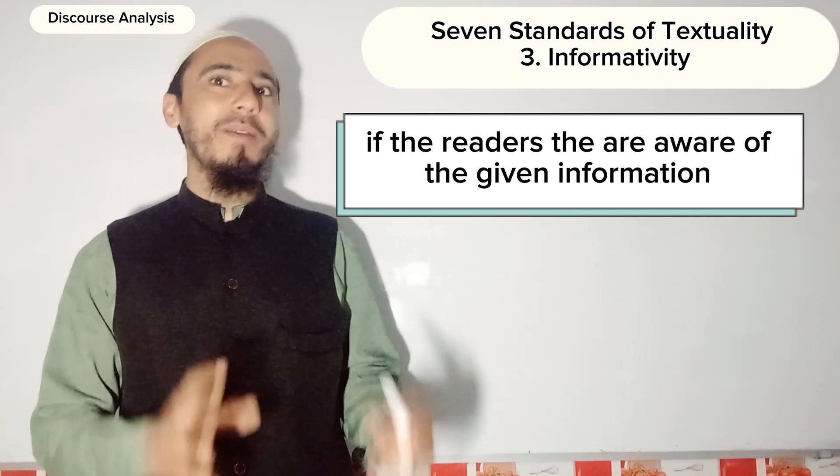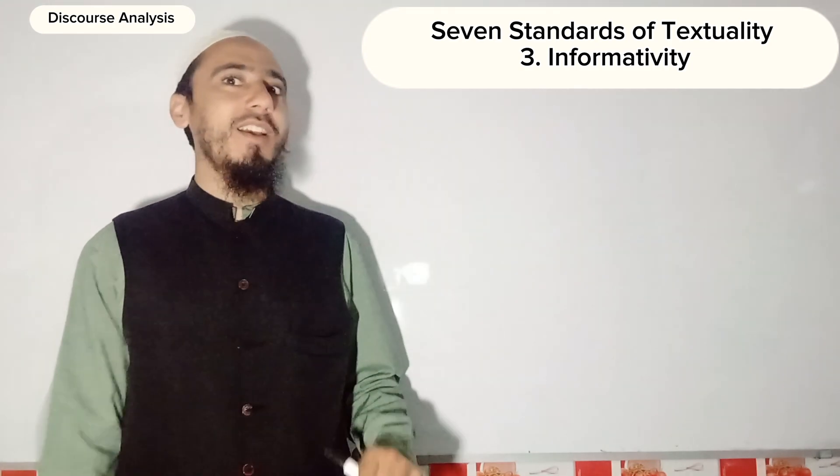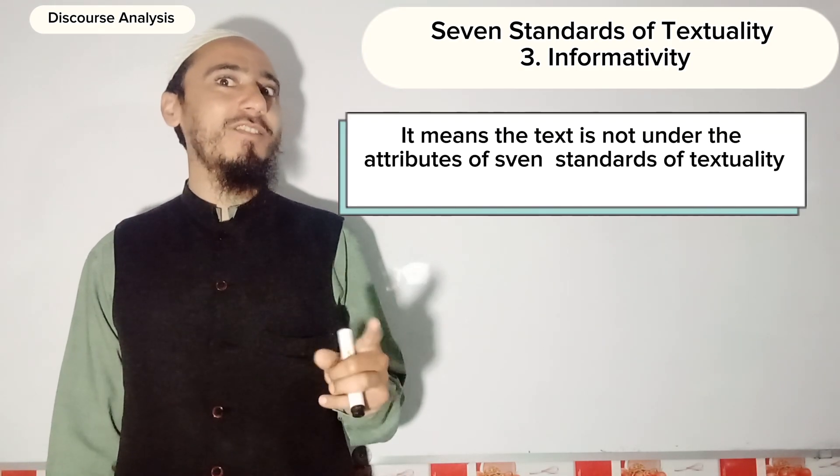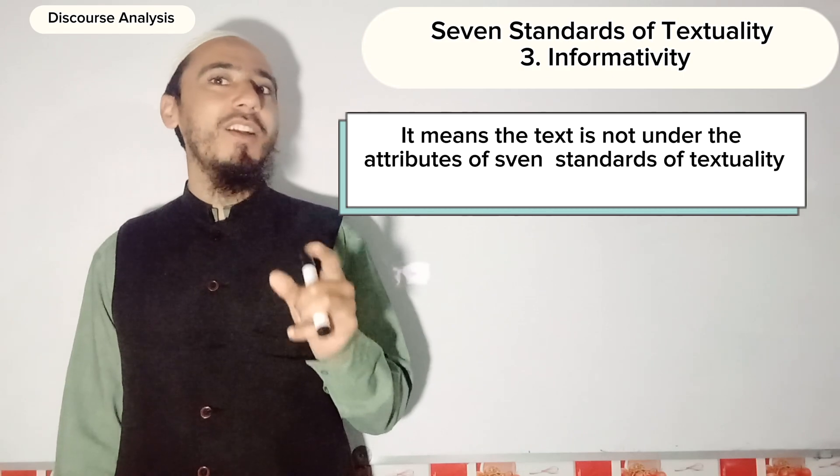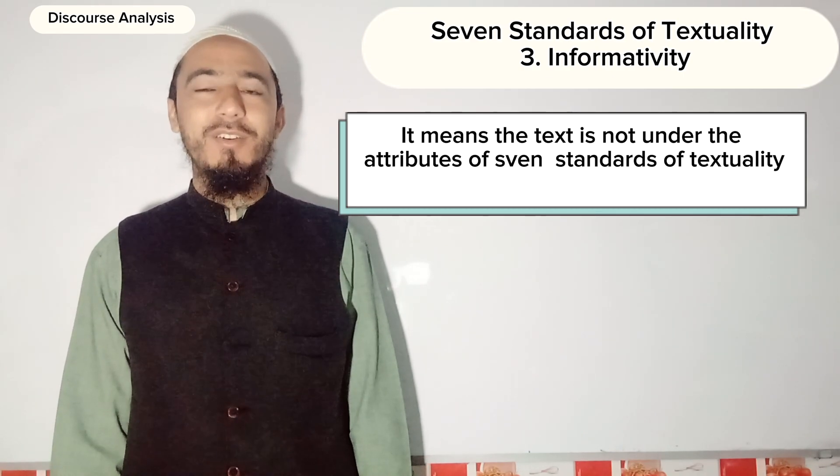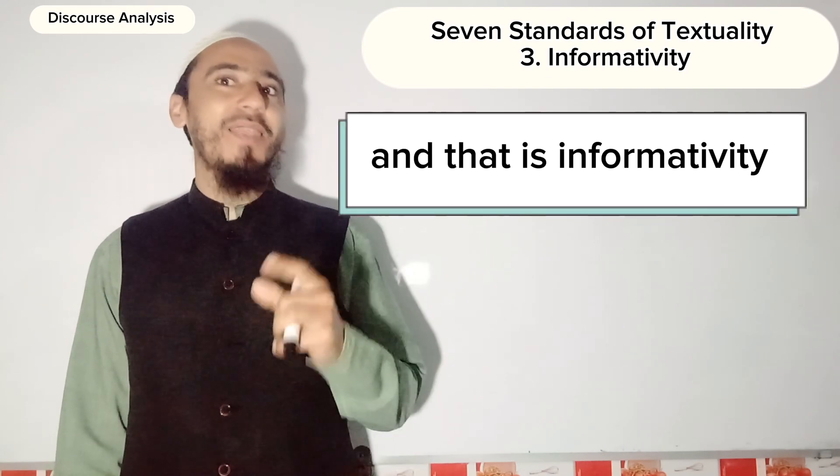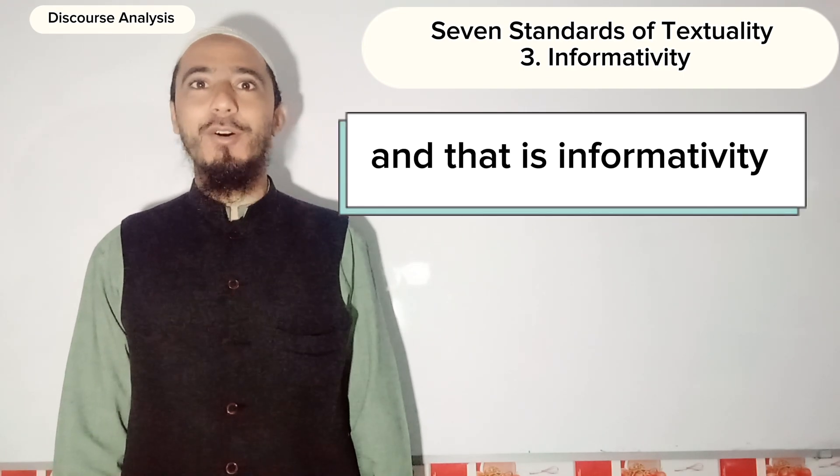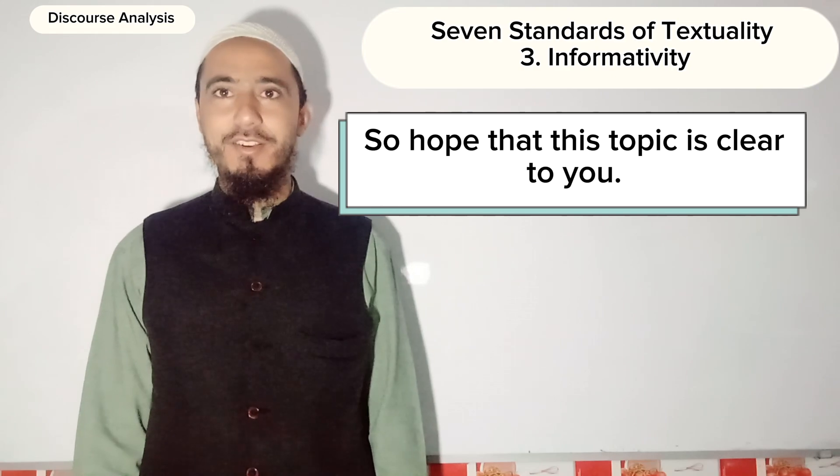If the readers are aware of the given information, it means the text is not under the attributes of the seven standards of textuality, which is informativity. I hope this topic is clear to you. Thank you.